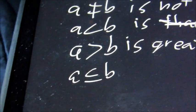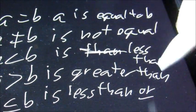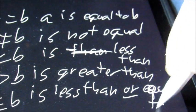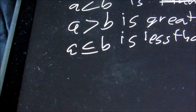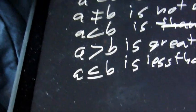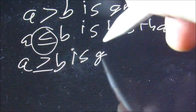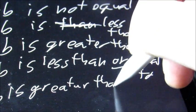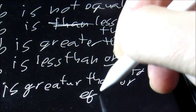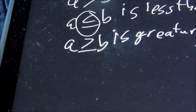We could also have less than with a line under it, which means less than or equal to. For example, one is less than or equal to one, or one is less than or equal to two — if either of those statements is true, we can use this symbol. We can also have it the opposite way: greater than or equal to, such as two greater than or equal to two.